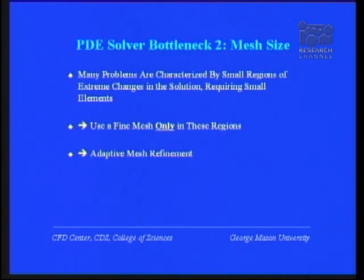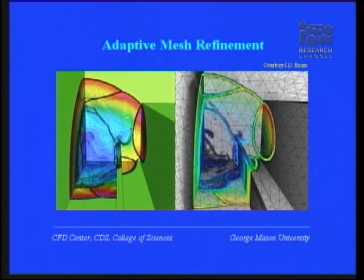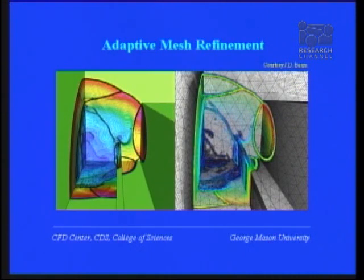A second bottleneck was mesh size. Many problems are characterized by very small regions with extreme changes in the solution requiring a very fine grid, while overall other parts of the flow field have nothing happening — so we only want a fine mesh in those regions, but we don't know in advance where they are. The solution is adaptive mesh refinement. A typical case: a blast going over a wall and hitting a back building. You can see the adaptive refinement — all those black lines are tiny elements that have automatically refined, and this happens every five time steps automatically.